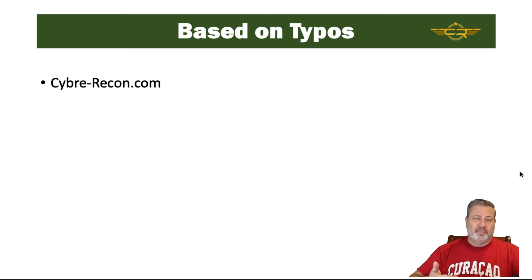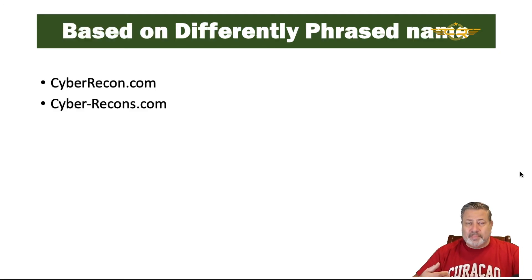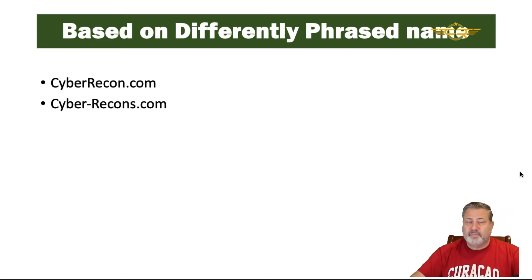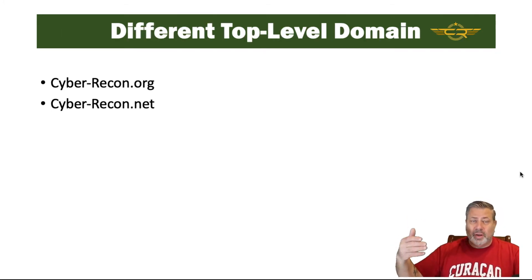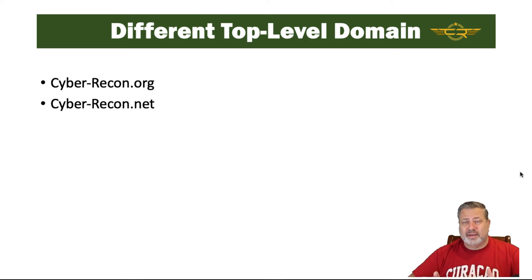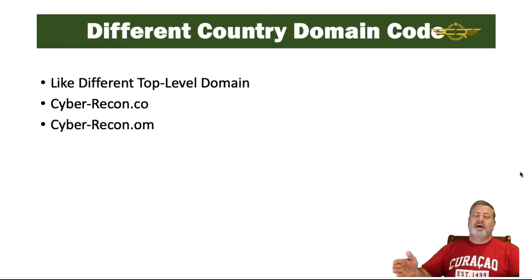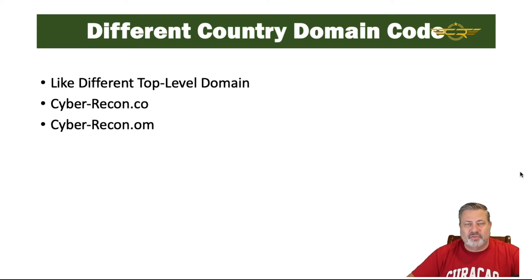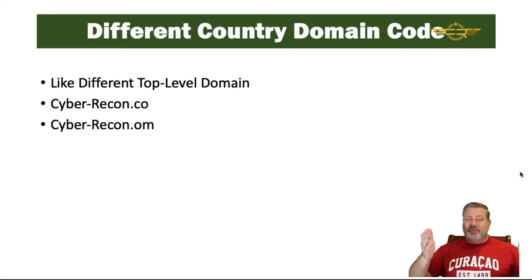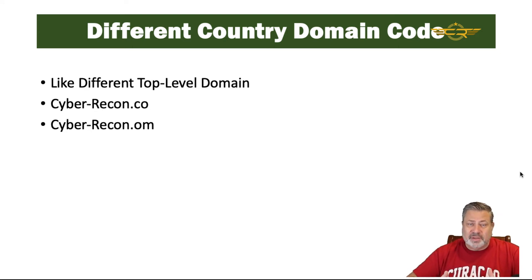Maybe it's based on a differently phrased name — cyberrecon without the hyphen, or cyberrecons with an S at the end. There are many other variations. A different top-level domain is another approach: cyberrecon.org or cyberrecon.net — the word spelled correctly but with a different TLD. And a different domain code: .co and .om are very popular. People often forget to type the M in .com, and .om catches someone typing too fast and missing the C.